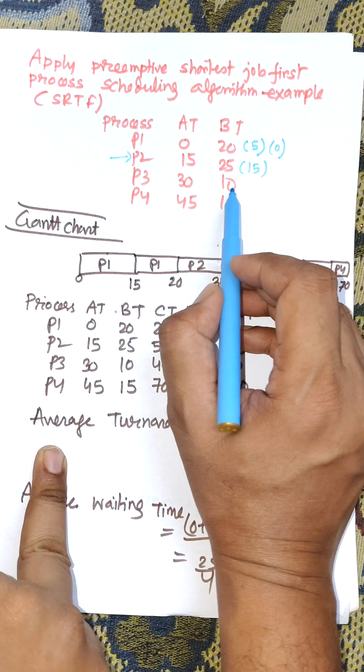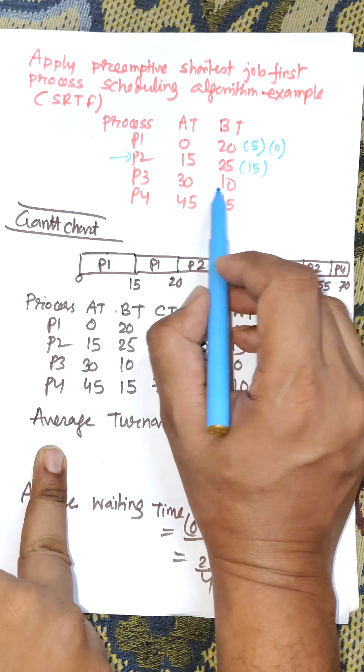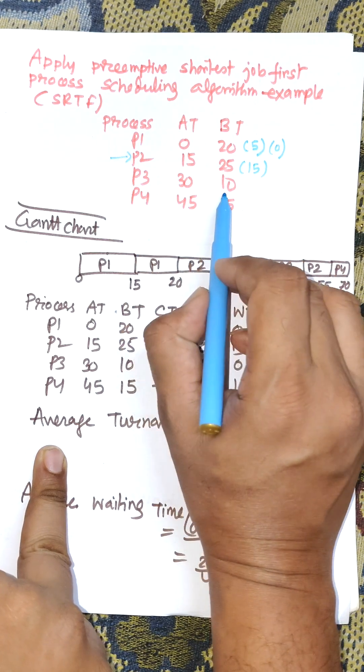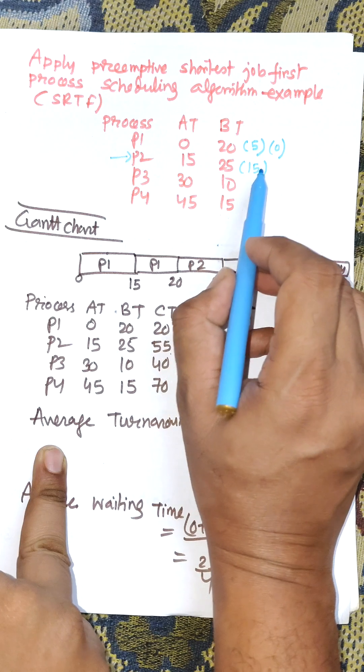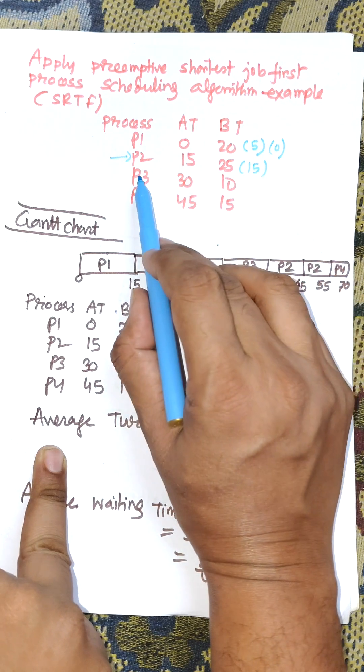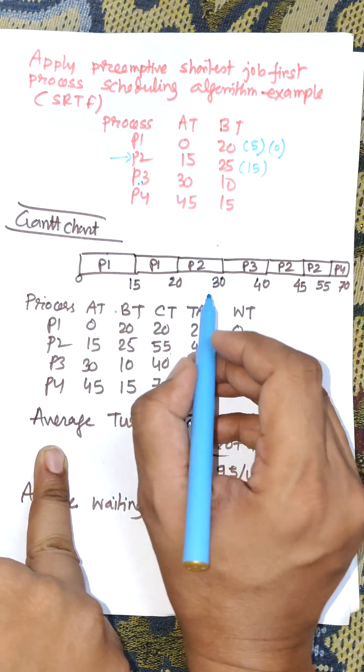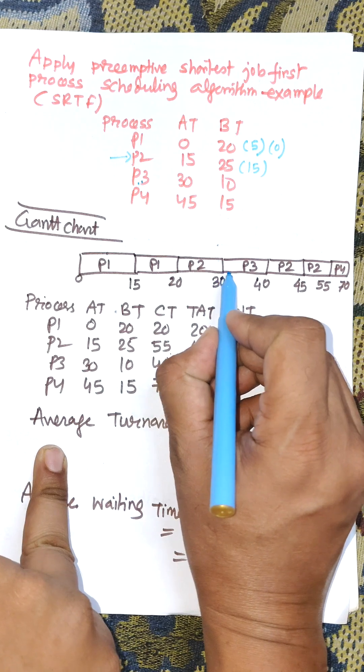The remaining time of P2 is 15 and the burst time for P3 is 10. Among 15 and 10, P3 is the shortest, so P3 will be selected for execution.